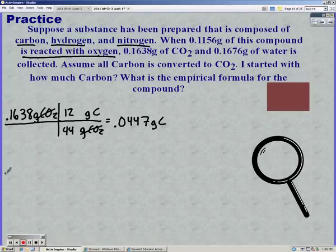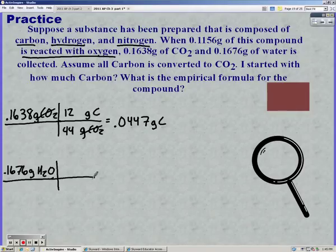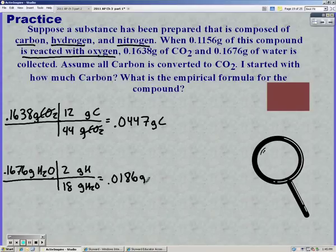We're going to do the same thing with water, but to find our hydrogen. So mass of water on bottom, and we're looking for our mass of hydrogen. For every 18 grams, two of that is hydrogen. So you get 0.0186.